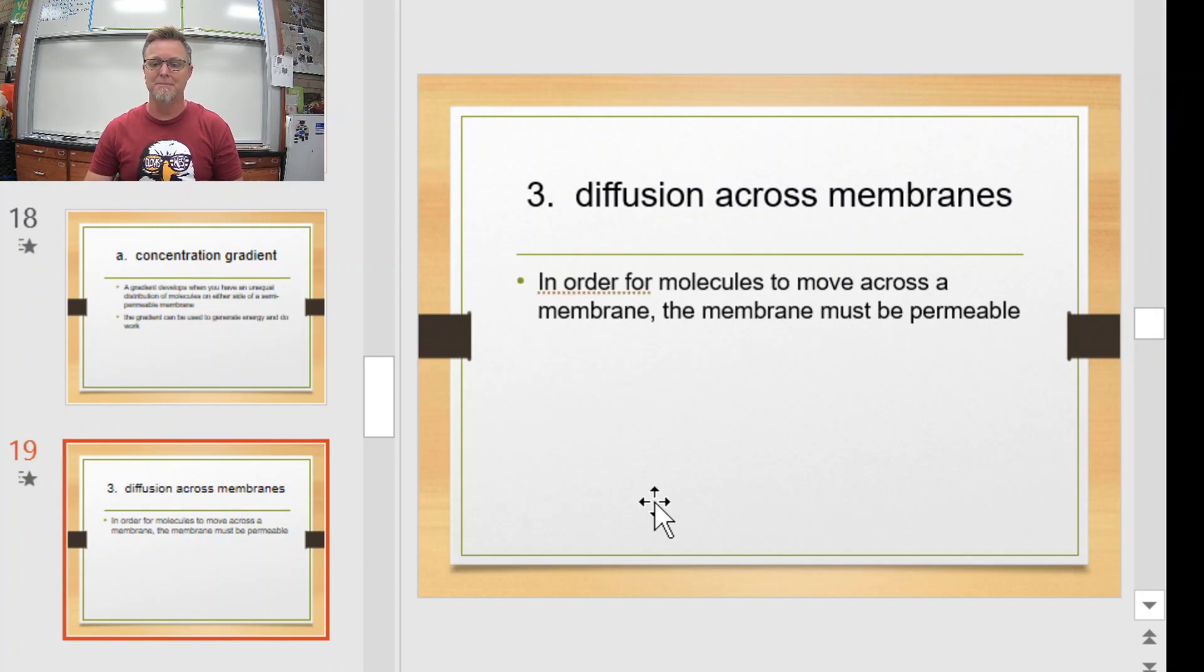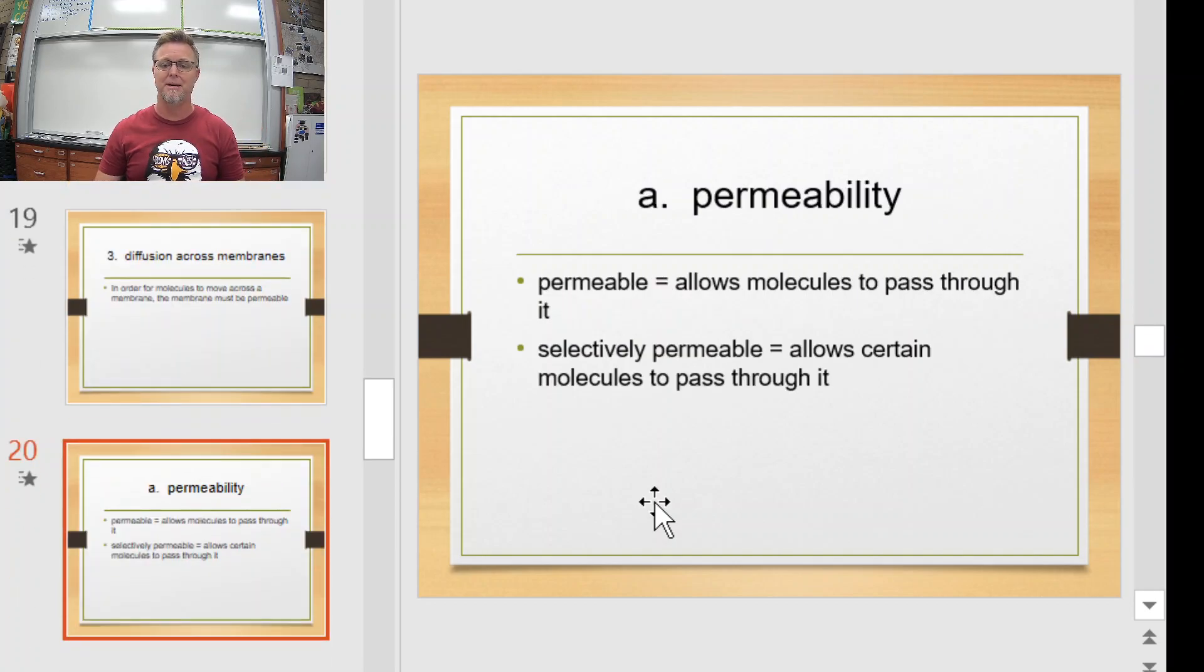Now, diffusion across membranes. In order for molecules to move across the membrane, the membrane has to have some permeability. Well, fortunately for us, your cell membrane is actually selectively permeable, so some molecules can simply diffuse right on through. In the event that it's, again, large or charged, that's the one that's going to get the no-no from the cell membrane itself. So, a couple definitions. If you're permeable, it allows molecules to pass all the way through it easily. Obviously, if you're selectively permeable, remember, it only allows certain things to pass through.